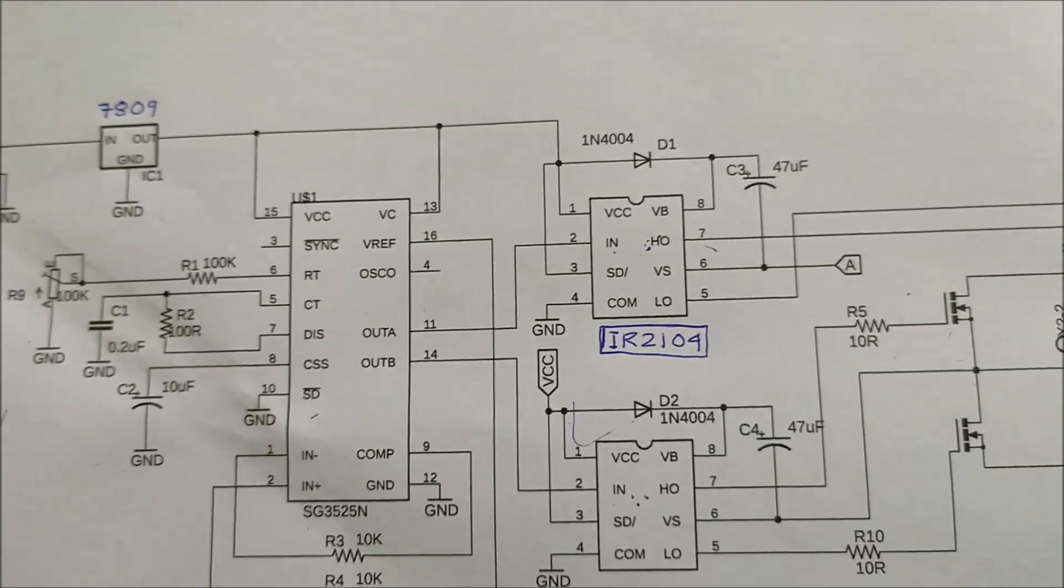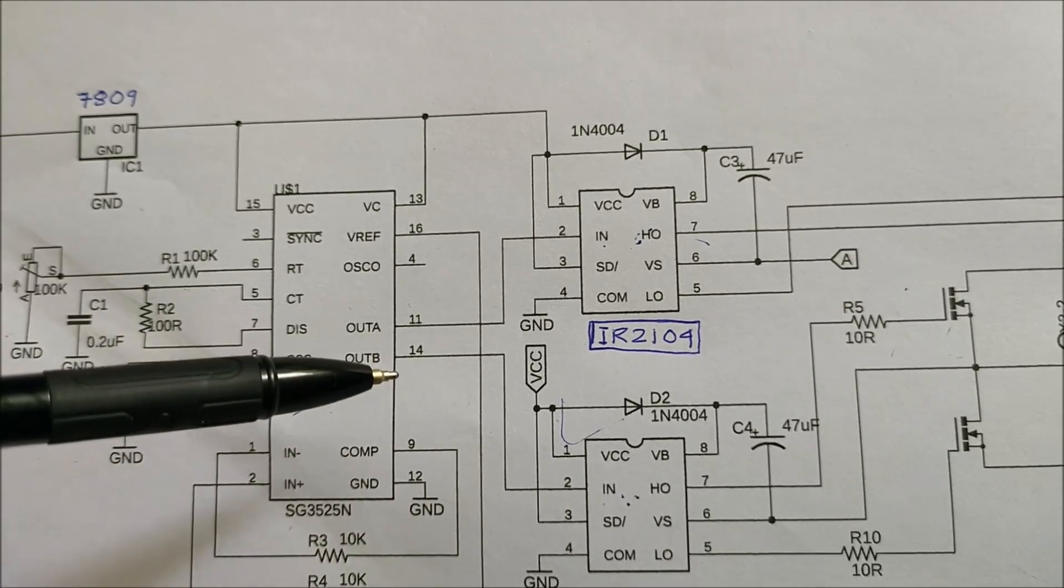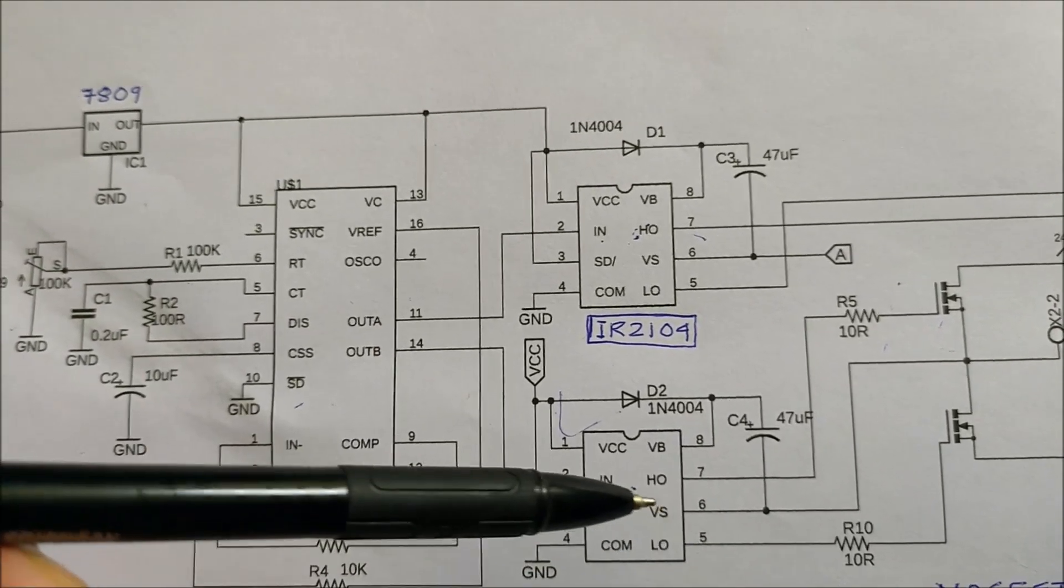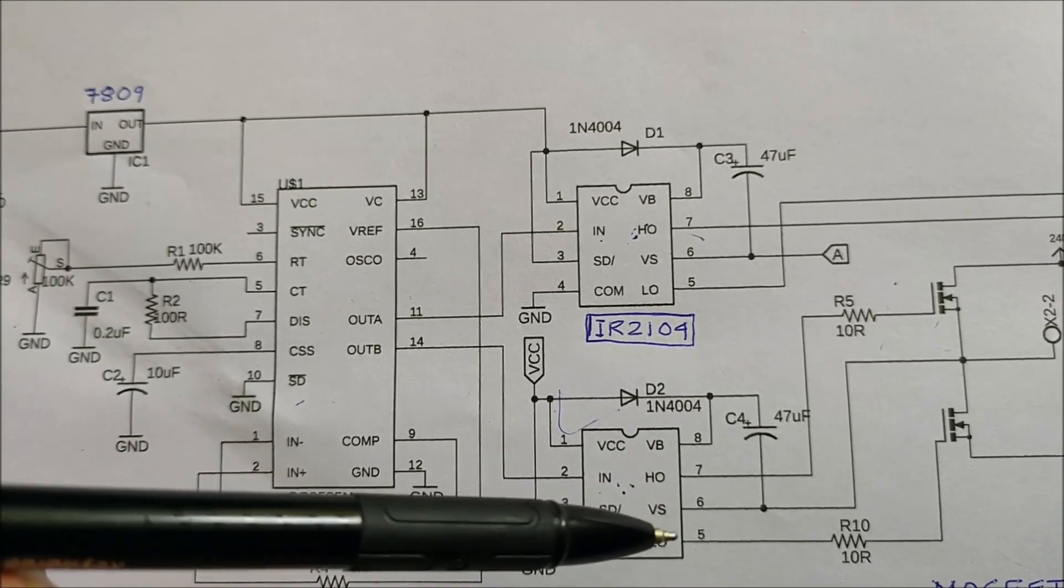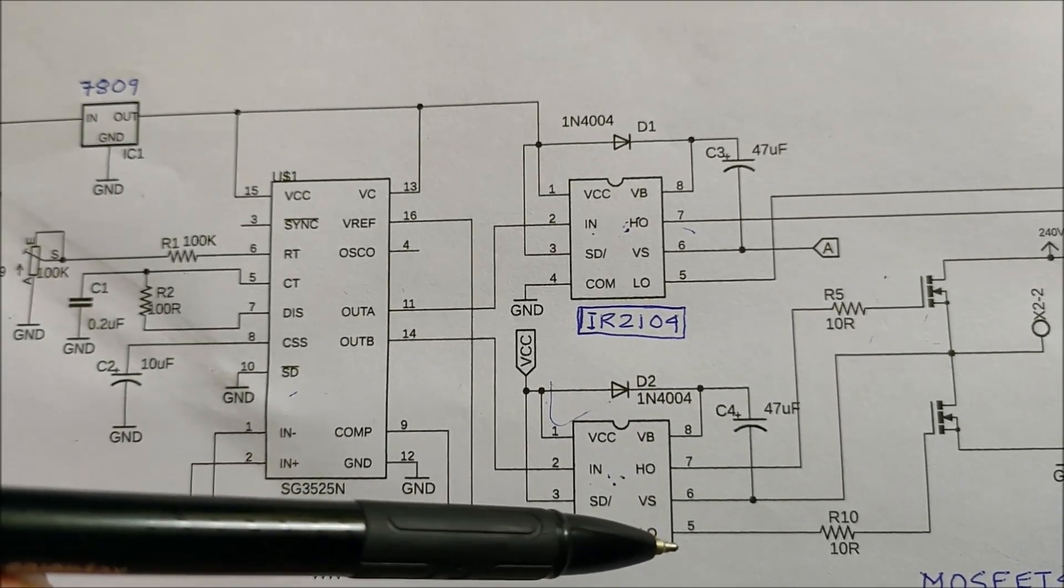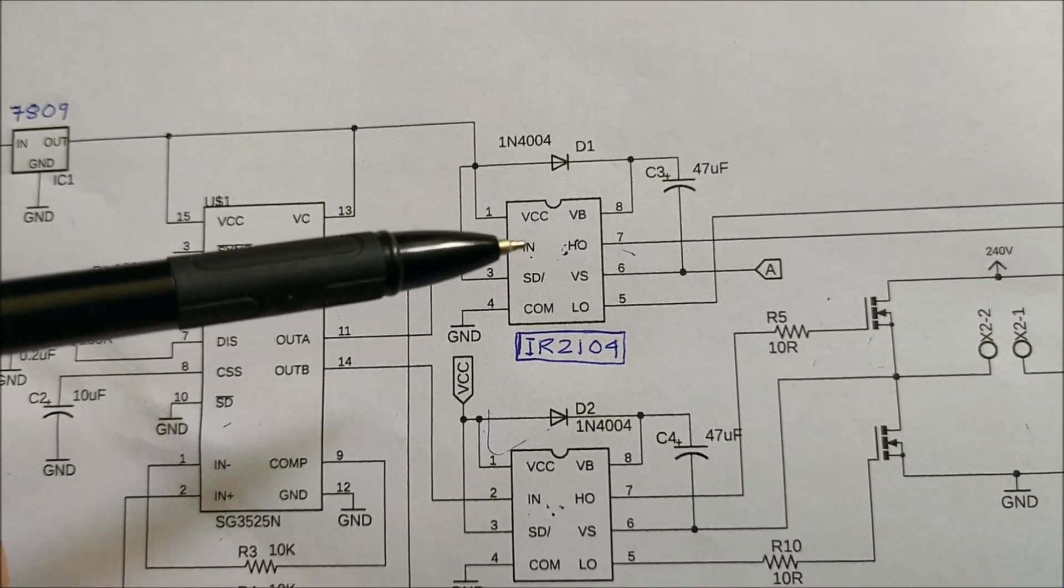Now when the signal switches meaning when pin 11 goes low and pin 14 goes high, the high side MOSFET of the second MOSFET driver is on, the low side MOSFET of the second MOSFET driver is off and just the reverse happens for the first MOSFET driver.